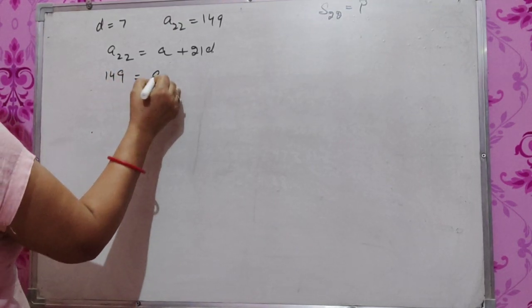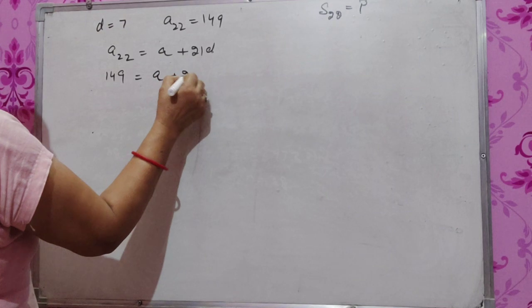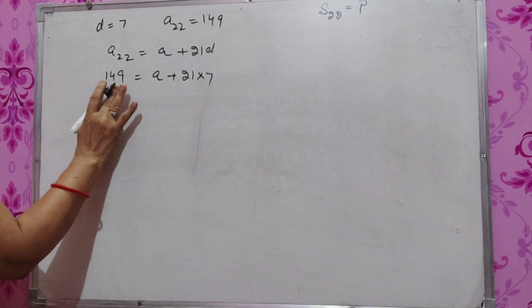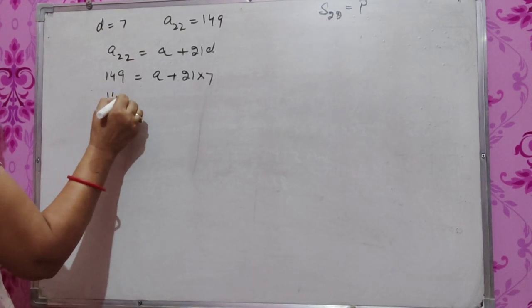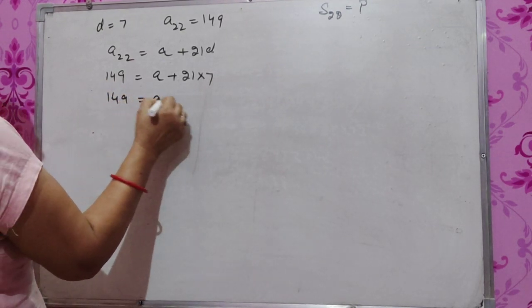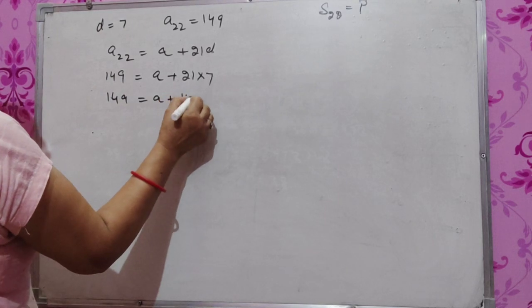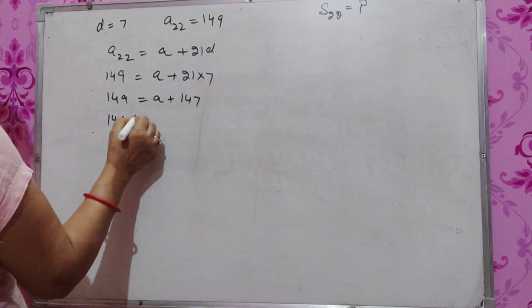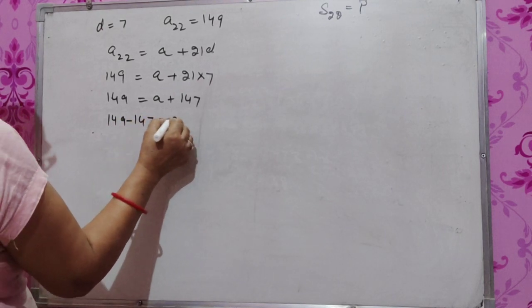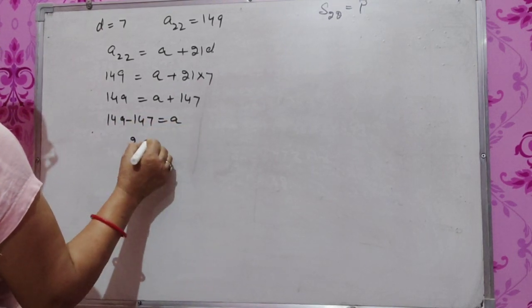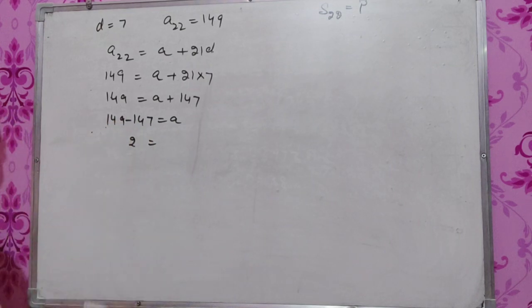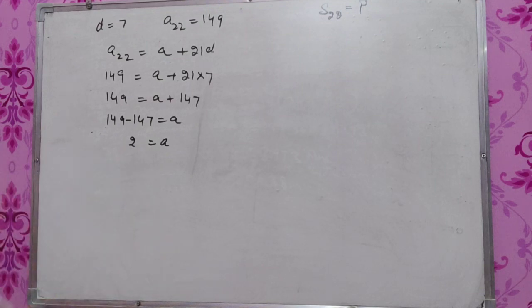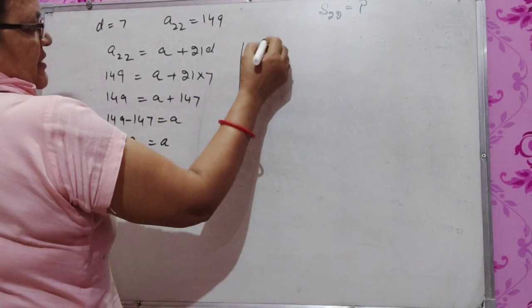So 149 equals a plus 21 times 7, which is 149 equals a plus 147. Therefore, 149 minus 147 equals a. A equals 2. Now we need to find S_22.